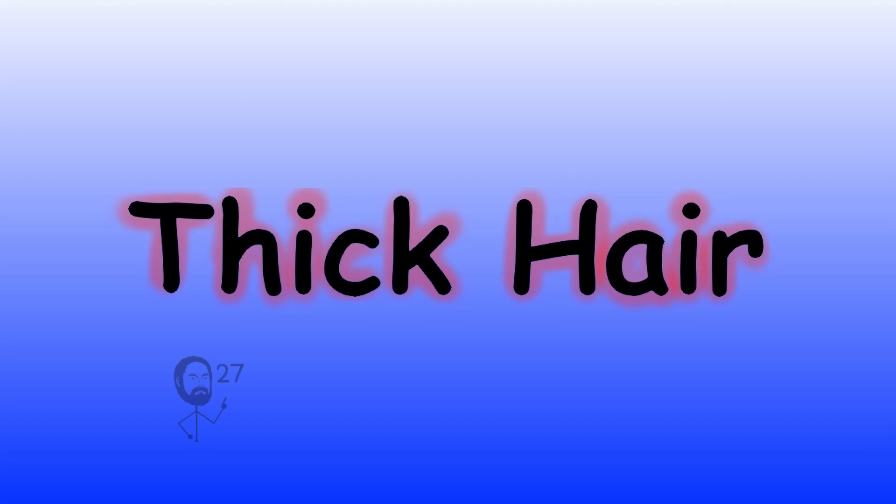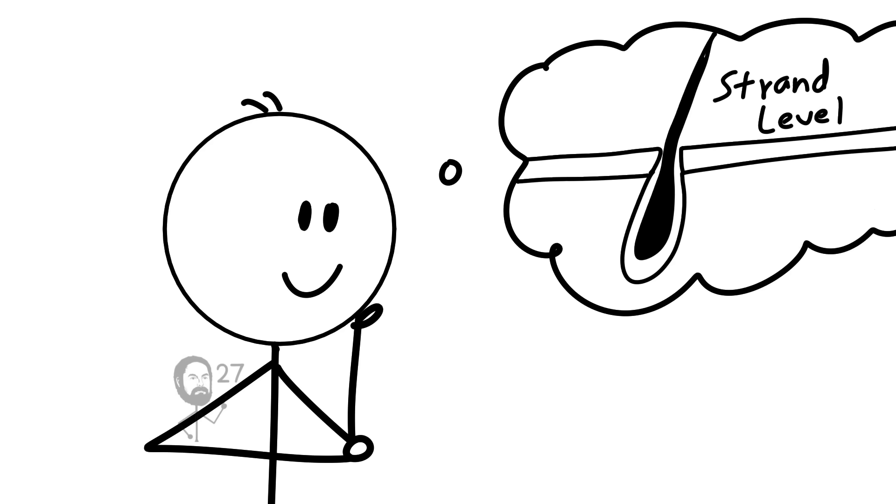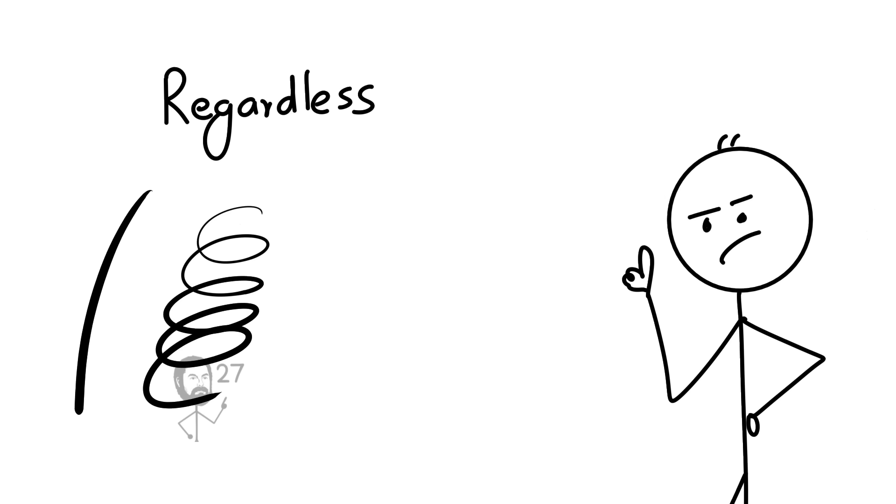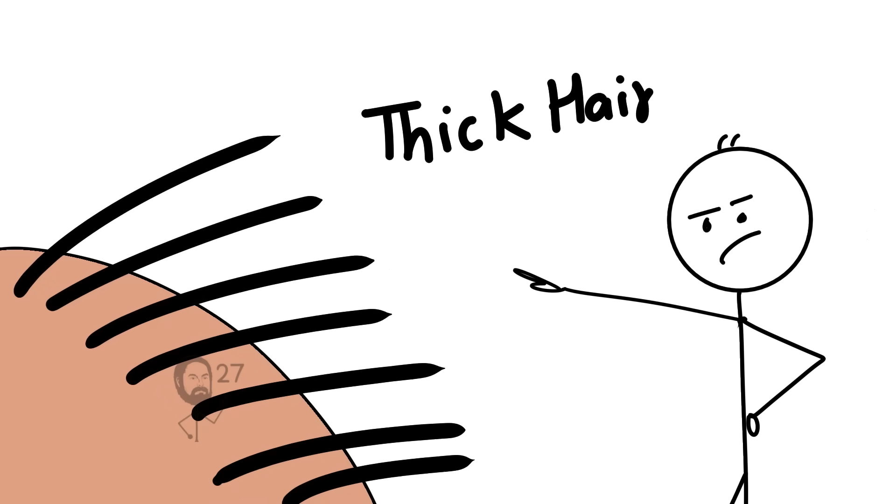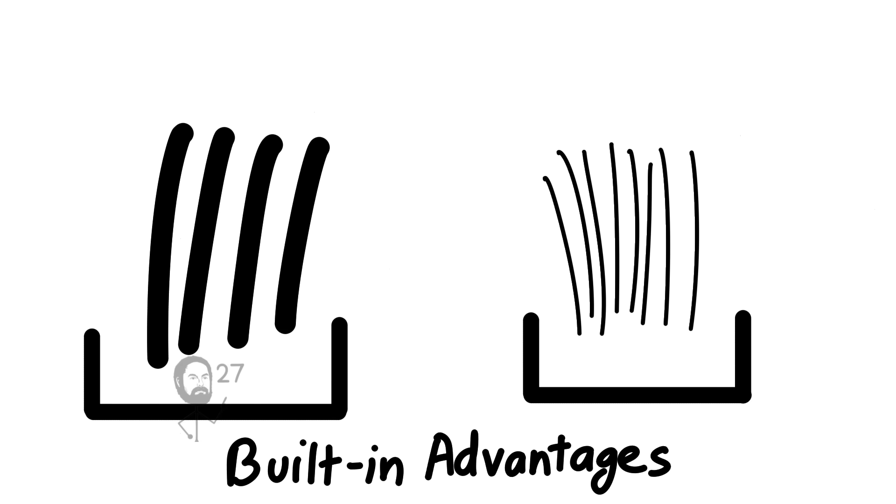Now shifting from hair types to structural traits, we'll explain what happens at the strand level. Regardless of whether your hair is straight, coily, wavy, or curly, it can be composed of either thick or fine strands. Each comes with its own set of built-in advantages.